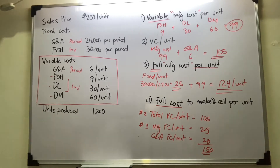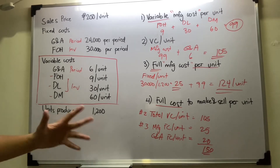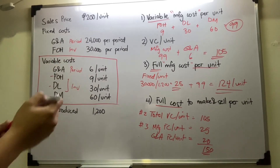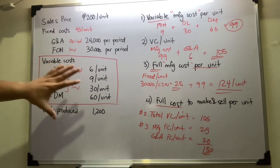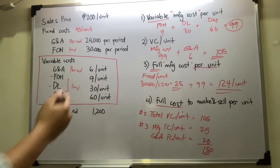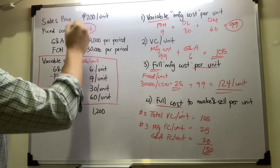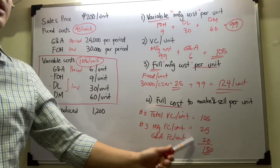To verify: total fixed costs are 24,000 + 30,000 = 54,000 pesos. Divided by 1,200 units = 45 pesos per unit fixed cost. Total variable cost per unit is 6 + 9 + 30 + 60 = 105 pesos. Adding 45 + 105 = 150 pesos. This confirms our answer — it balances and checks out.